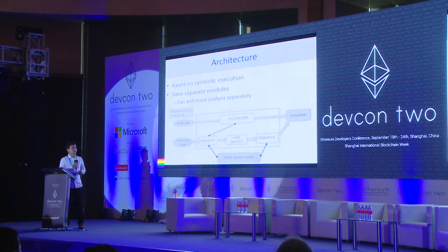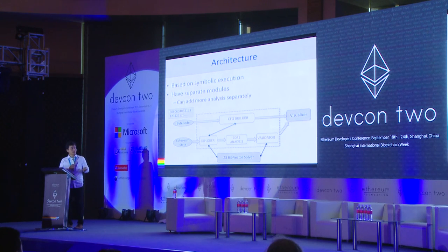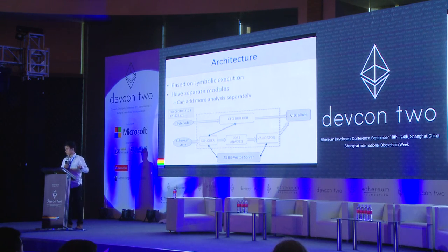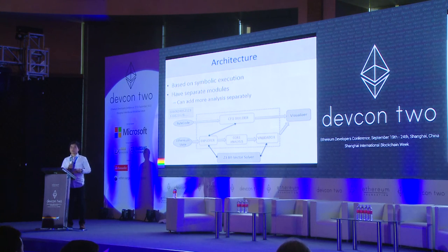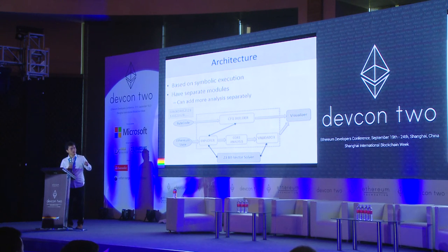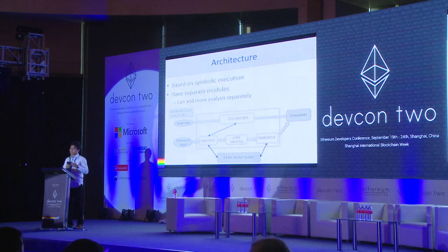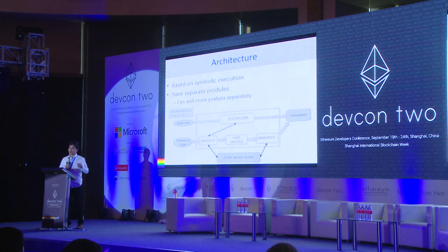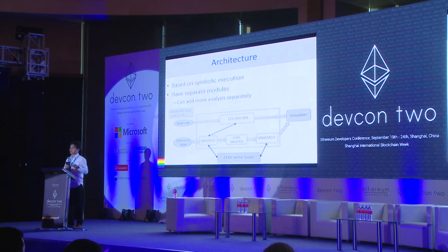Here is the high-level architecture of Oyente, which is based on symbolic execution. Oyente takes bytecode as input, and from the bytecode we generate the control flow graph. From the control flow graph, we pass it to the symbolic explorer, which explores all possible paths of the program. For every path explored, we forward it to the core analysis module, which detects whether that path has any problem we want to detect. If there is, we forward the result to a validator to check whether it is a false positive.